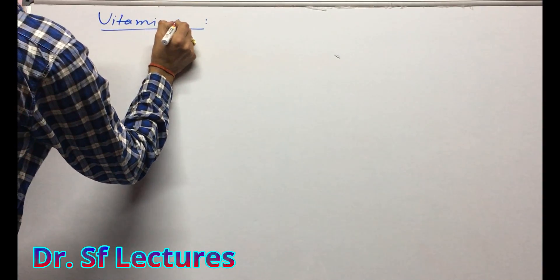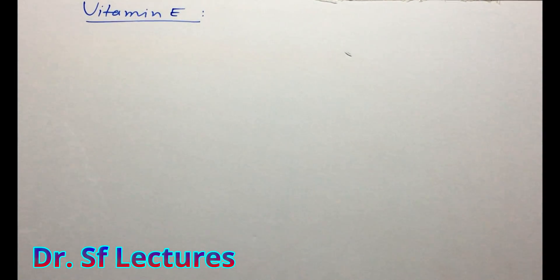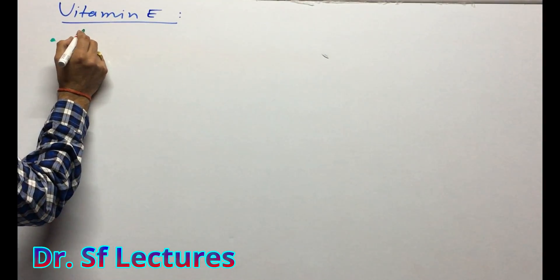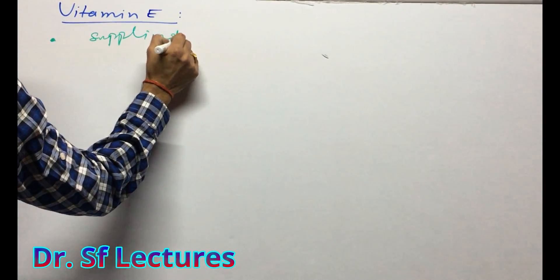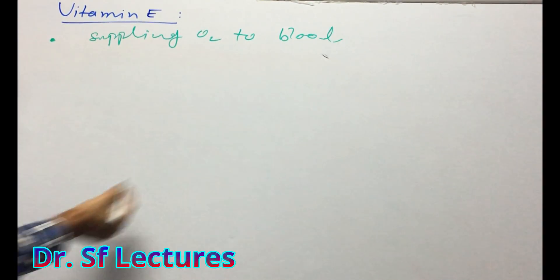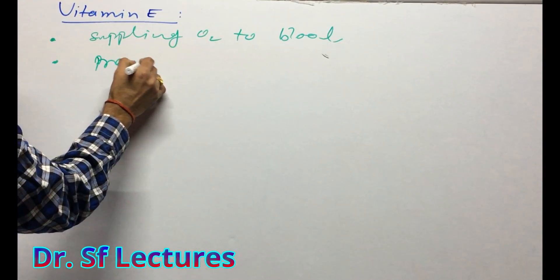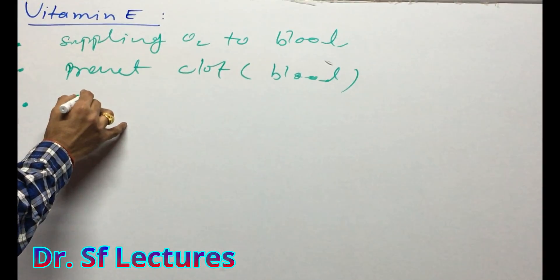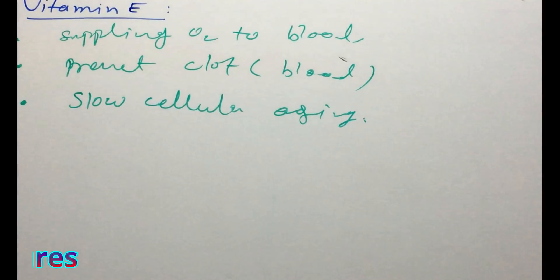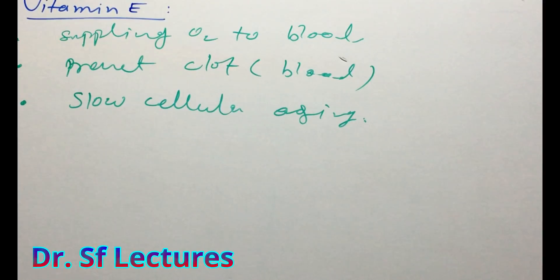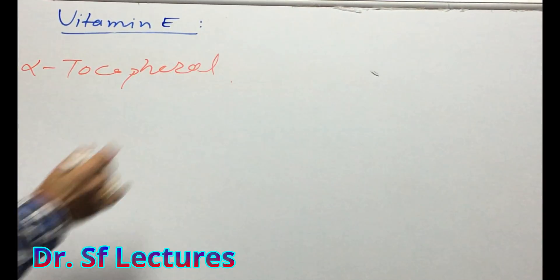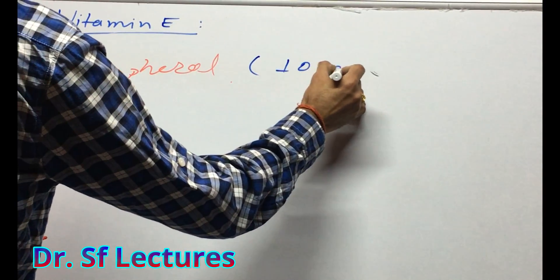Now we are going to talk about Vitamin E. The physiological role of Vitamin E is very important for blood — it helps in supplying oxygen to the blood. Vitamin E prevents blood clots and supports slow cellular aging. The generic name of Vitamin E is alpha-tocopherol, which we can use in a dose of 10 milligrams.